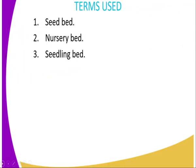Onto the terms used, we have a seed bed. What is a seed bed? A seed bed is a piece of land where plants are planted and grow to maturity and are harvested while on the same piece of land.